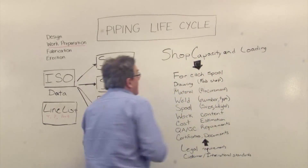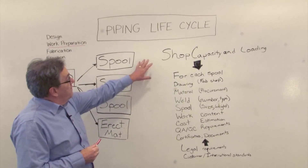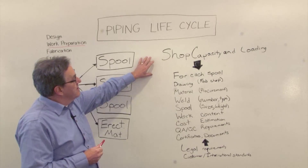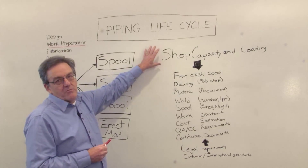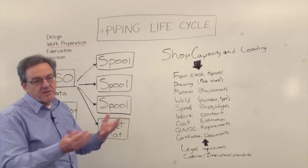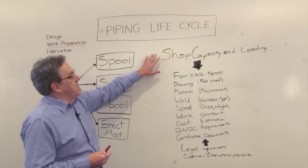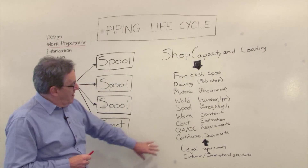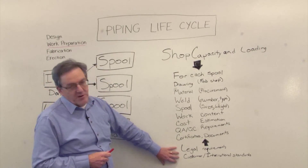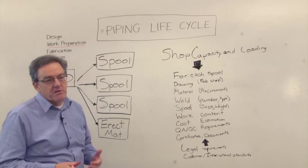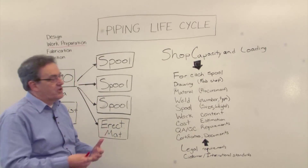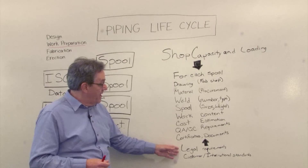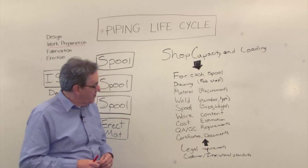Now we can start to derive a lot of information to help us plan this next stage in the process. We have a constraint — a certain capacity in the shop; we can bend a certain size of pipe, and obviously there's a dependency on how much work is already in the shop. We also have a load of legal requirements to meet: project standards, company standards, national and international regulations that determine the quality we have to apply to our piping fabrication process.